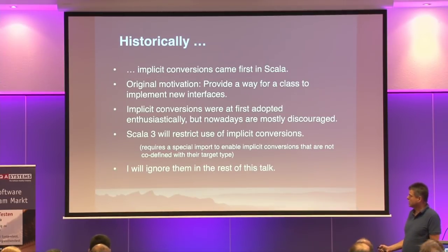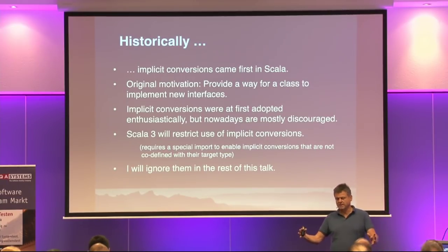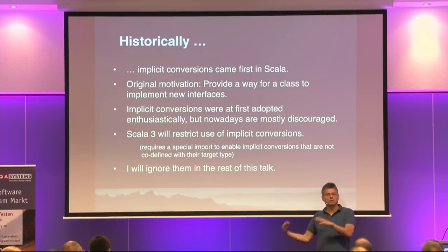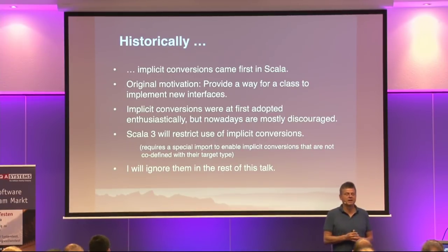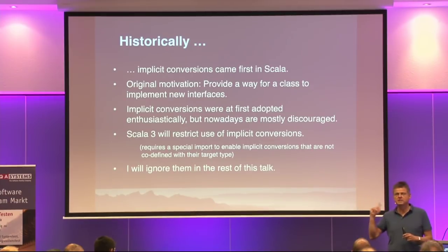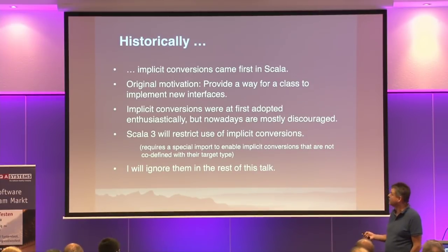More specifically, we will require a special import — essentially import language dot implicit conversion — to enable these implicit conversions that are not co-defined with the target type. That means that if I define a new interface and a bunch of conversions from old data to that interface, that was the intended use case and that's okay. But if I give you an implicit conversion from string to int, the compiler will scream and say, do you really need that? For this talk, I will ignore implicit conversions because essentially that's been a bit of a dead end, and concentrate on implicit parameters.